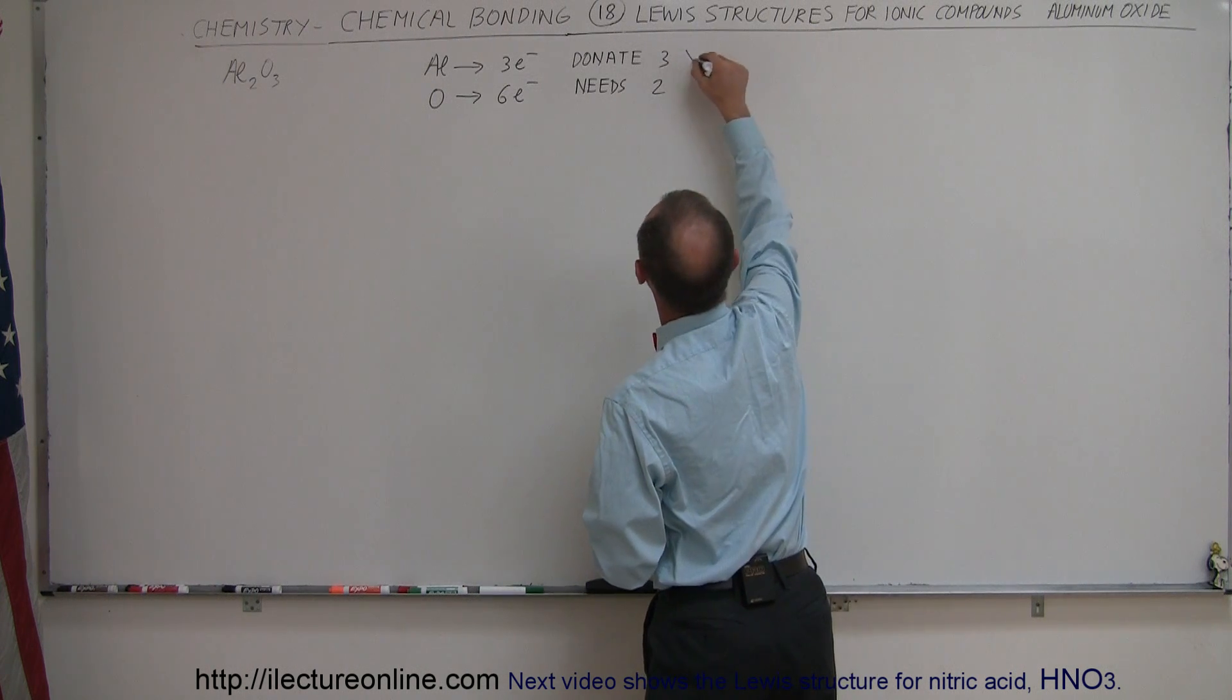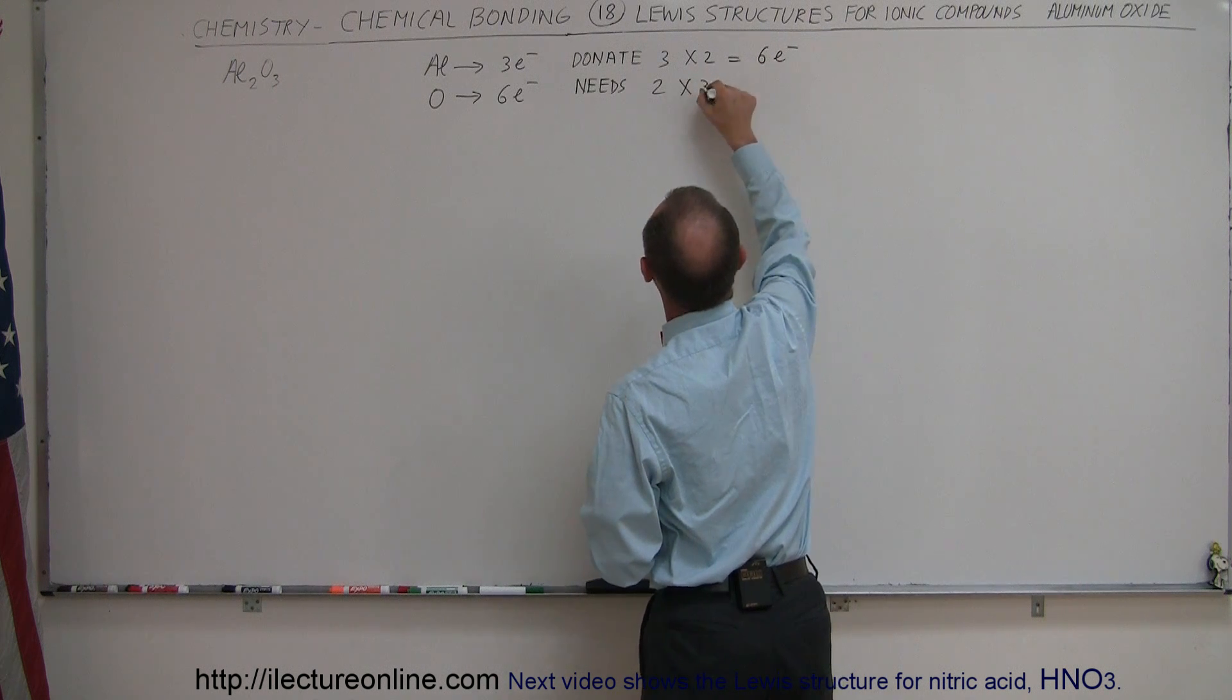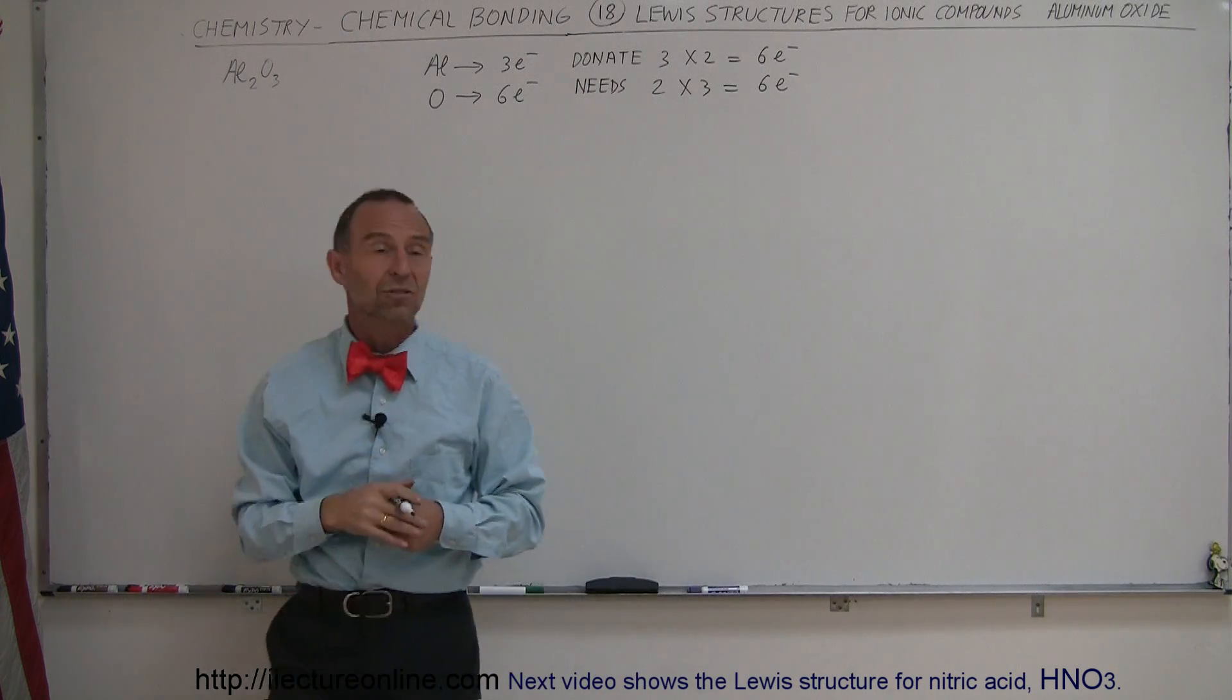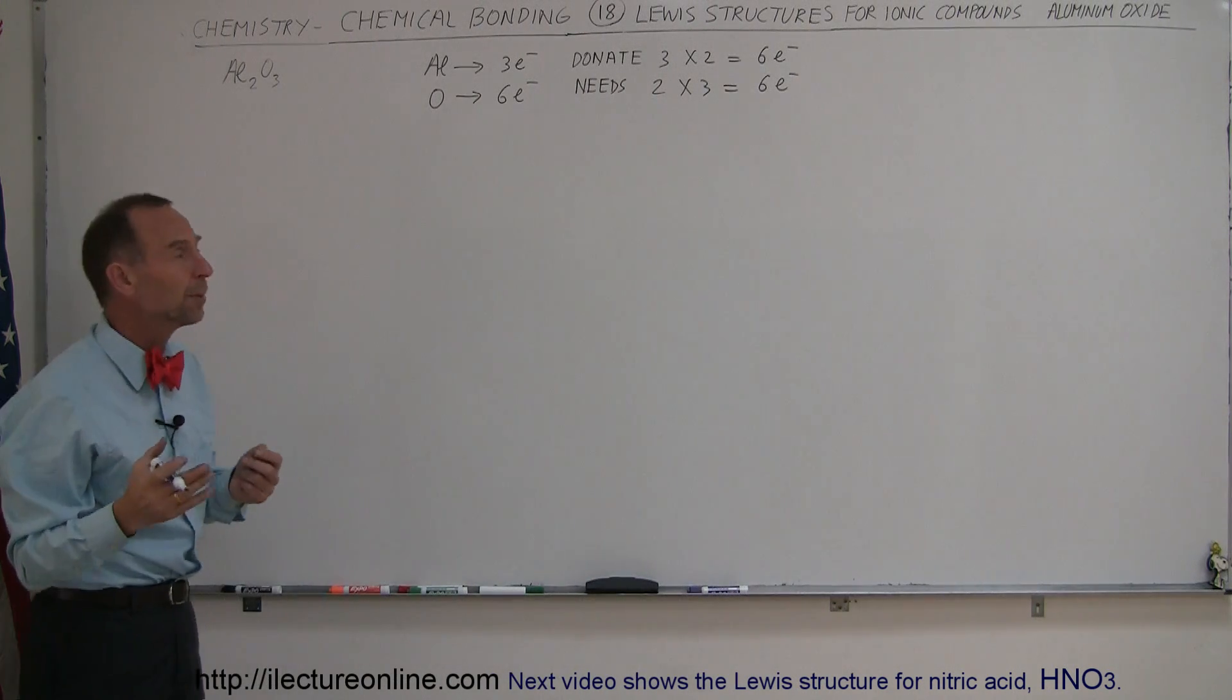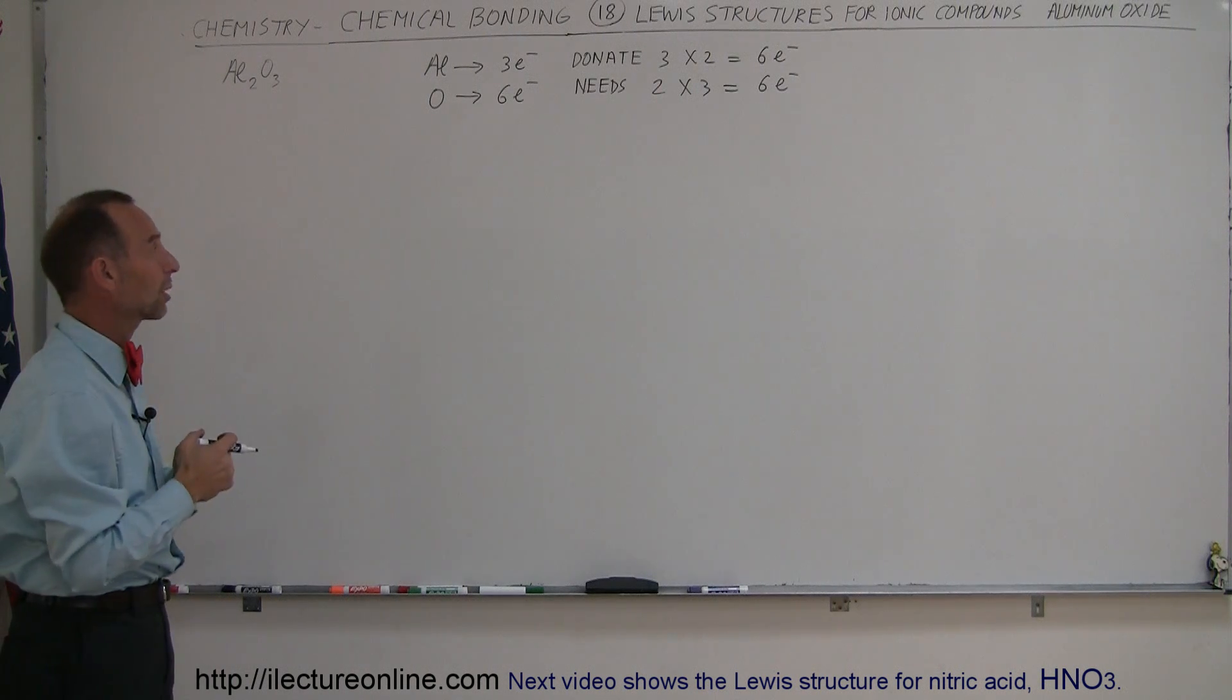So if we multiply this times two we get six valence electrons. We multiply this times three we get six valence electrons and then of course the six extra electrons from the aluminum can be donated to the three oxygens that then in total need six more electrons.